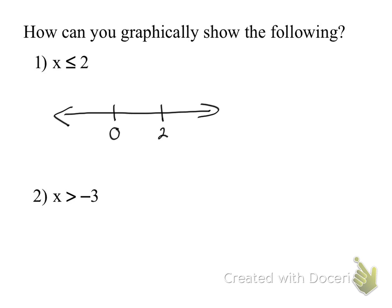When you are graphing it, we go to the starting point, which is 2. Because it says 'less than or equal to,' what kind of circle? A solid, closed circle. I read from the left to the right — x is less than or equal to 2, so which direction am I going? To the left. You must write arrows on the original number line and on the line that you're graphing.